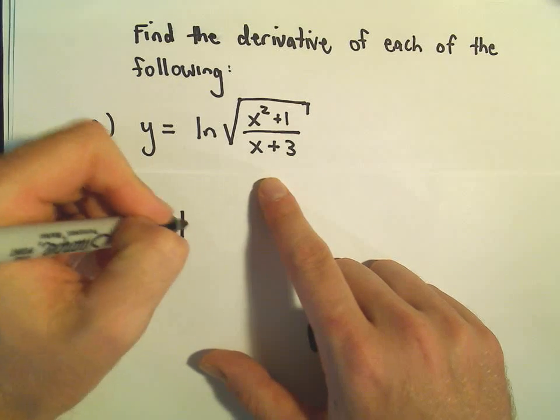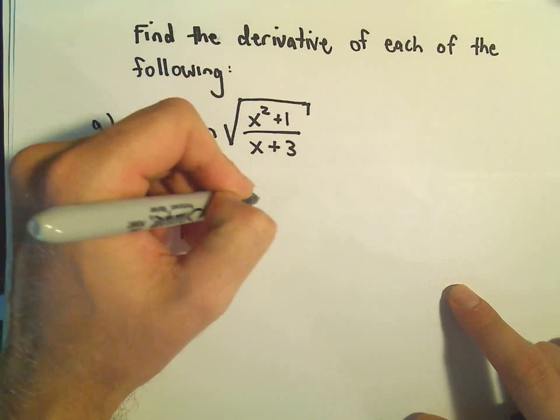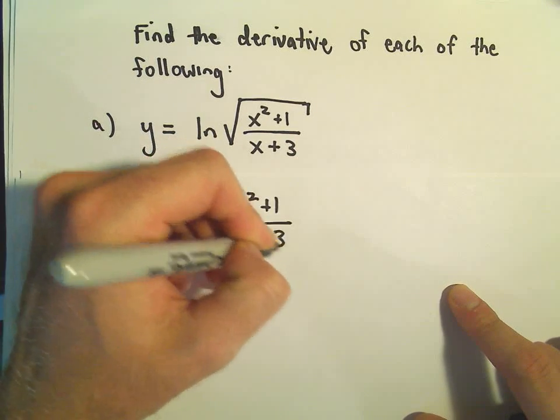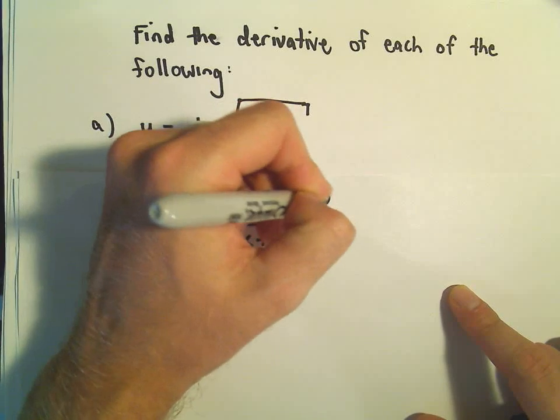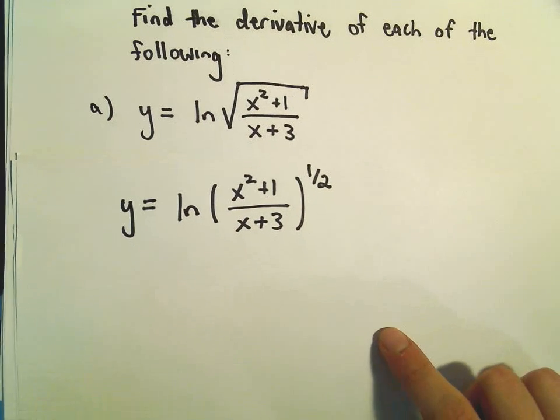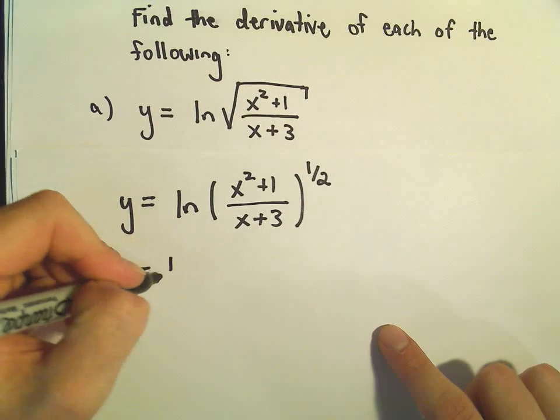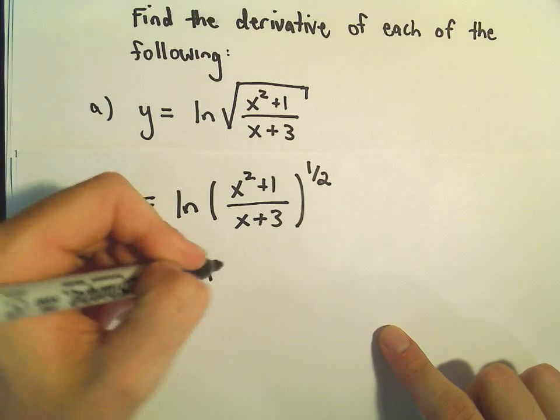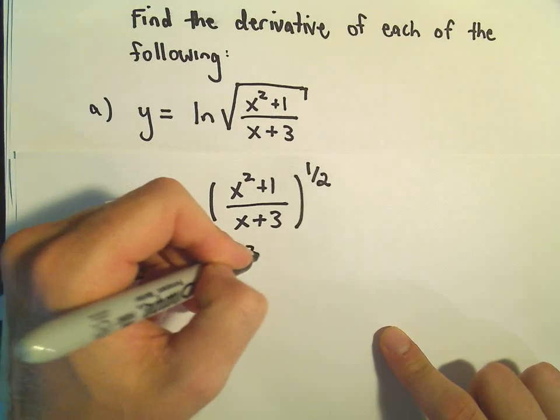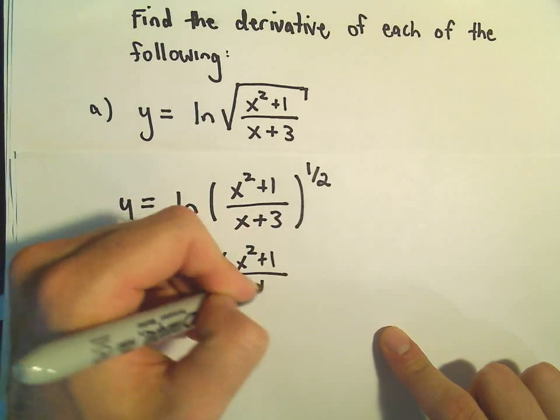So recall that we can write this as x squared plus 1 over x plus 3 all raised to the 1 half power. Well, now my exponent, that 1 half, I'm going to bring that out front, and then we would have the natural logarithm of x squared plus 1 over x plus 3.